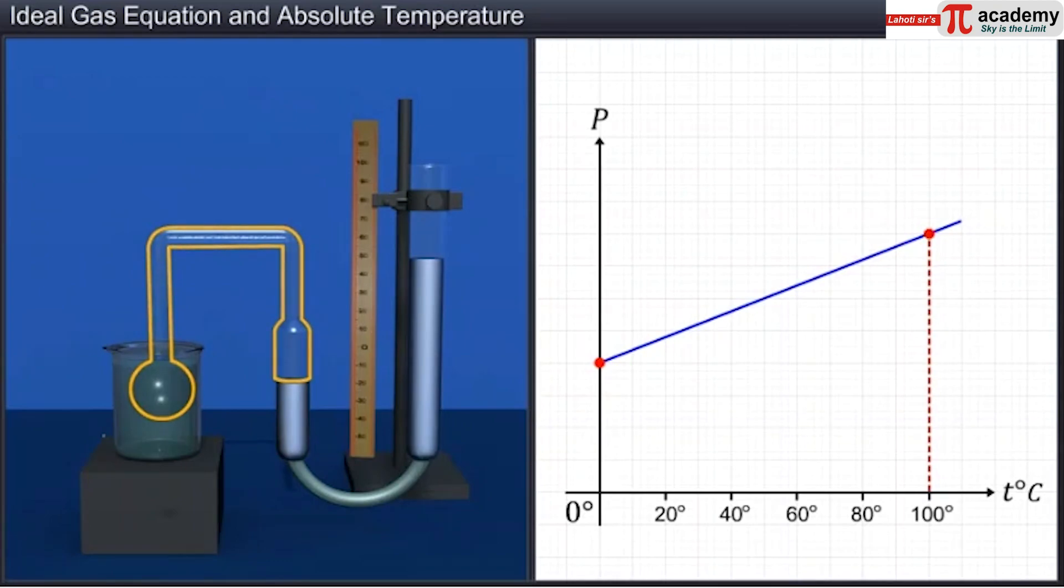If the density of the gas is low, the graph will be a perfect straight line for all gases over a large temperature range.